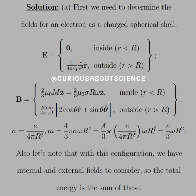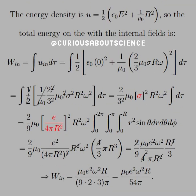With this configuration, we have an internal and external field to consider, so the total energy is the sum of these. The energy density U is equal to 1 half epsilon naught E squared plus 1 over mu naught B squared. The total energy within the internal fields of the electron as a spinning shell would be W_in equal to the integral of U_in d-tau. We see that E equals zero inside, that goes away, and we can just substitute in B. Simplifying through, we get a lot of cancellations, yielding 2 over 3 squared mu times sigma squared R squared omega squared times d-tau.